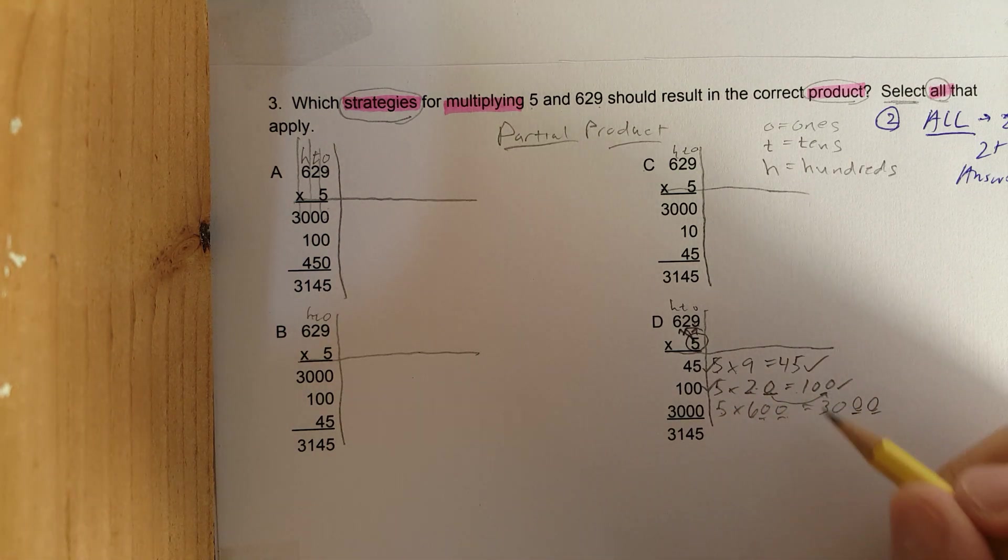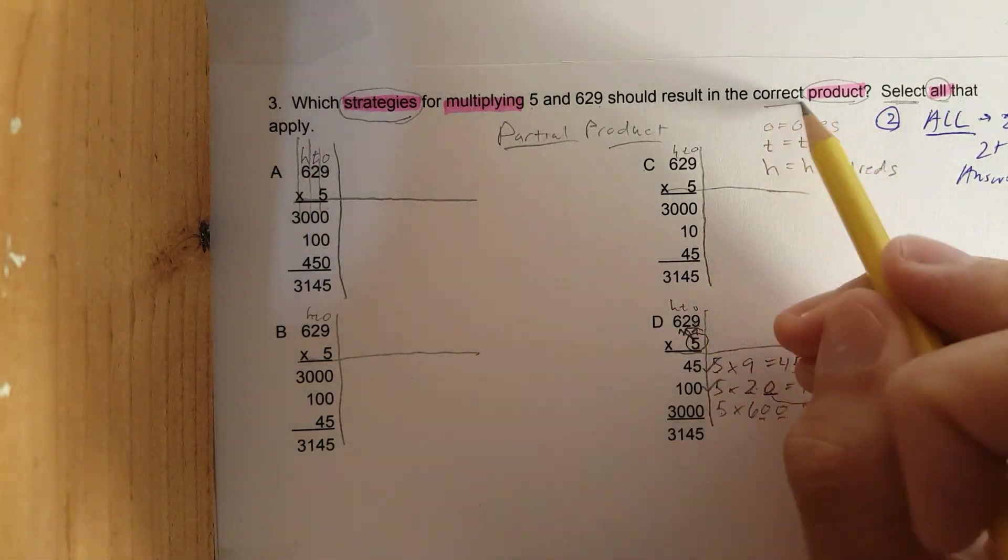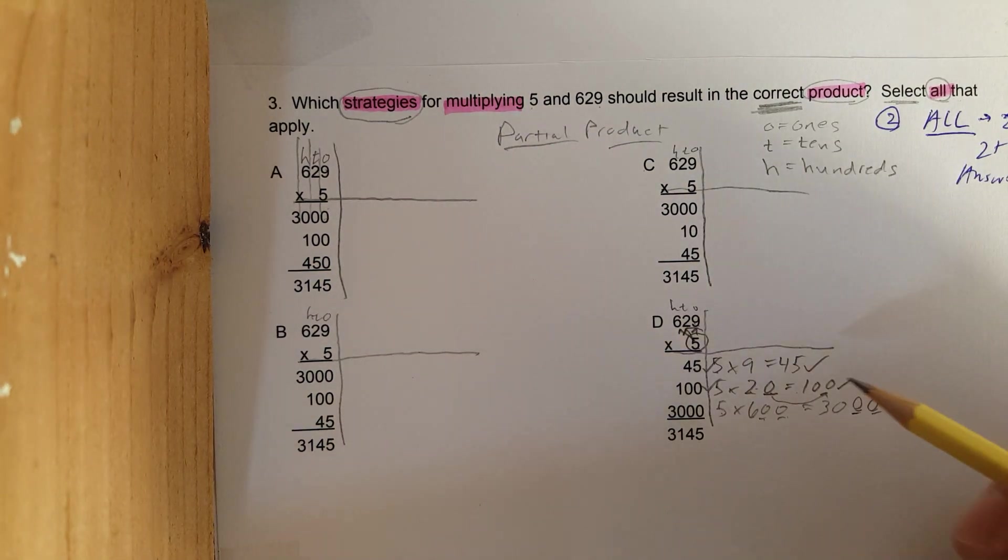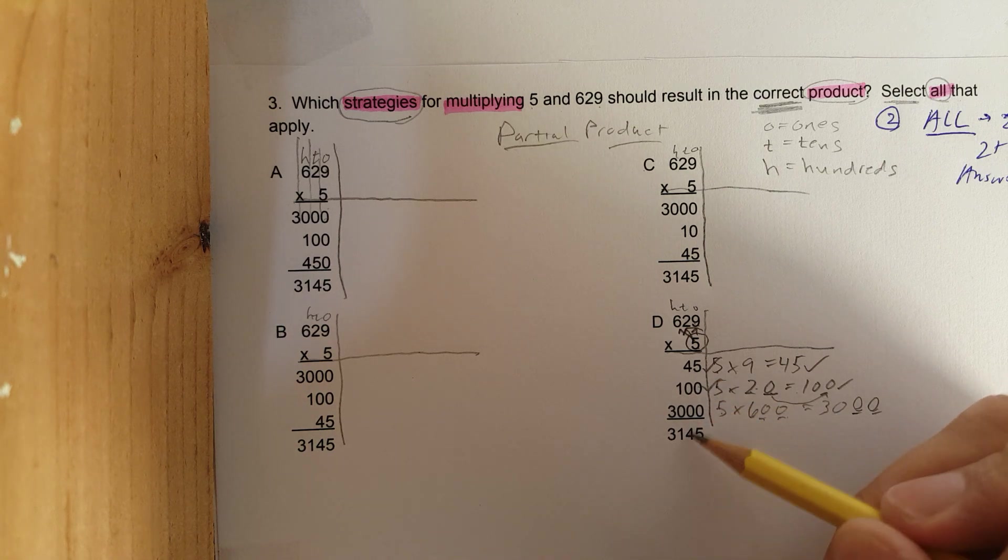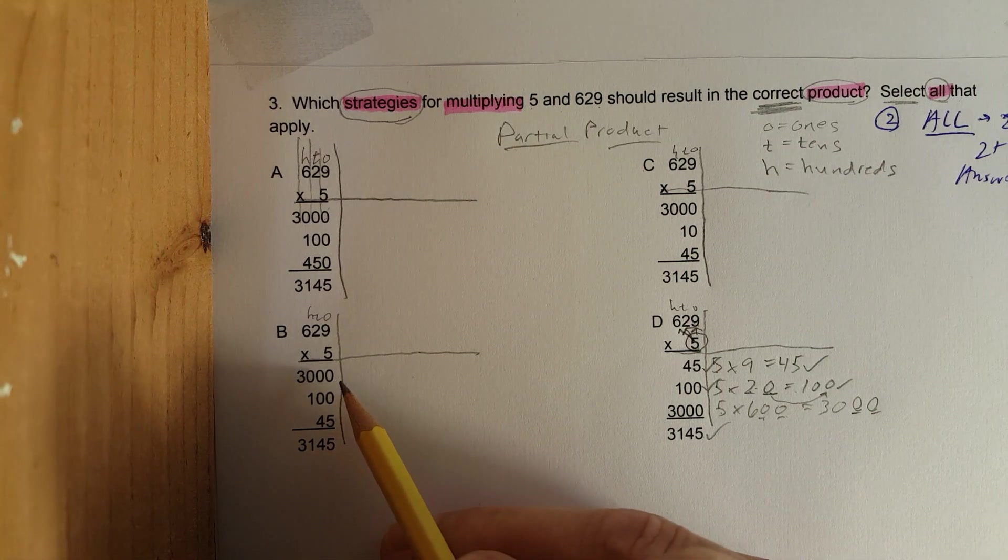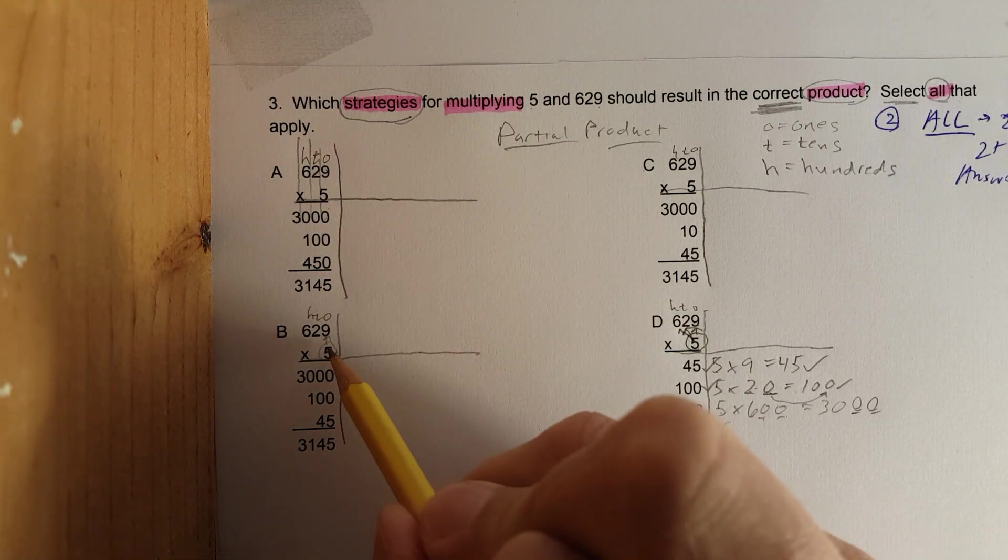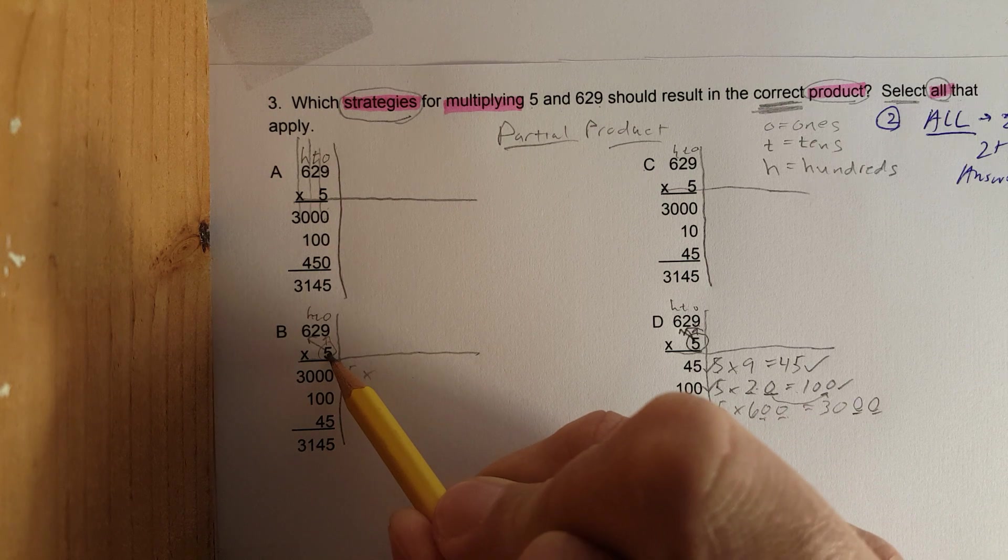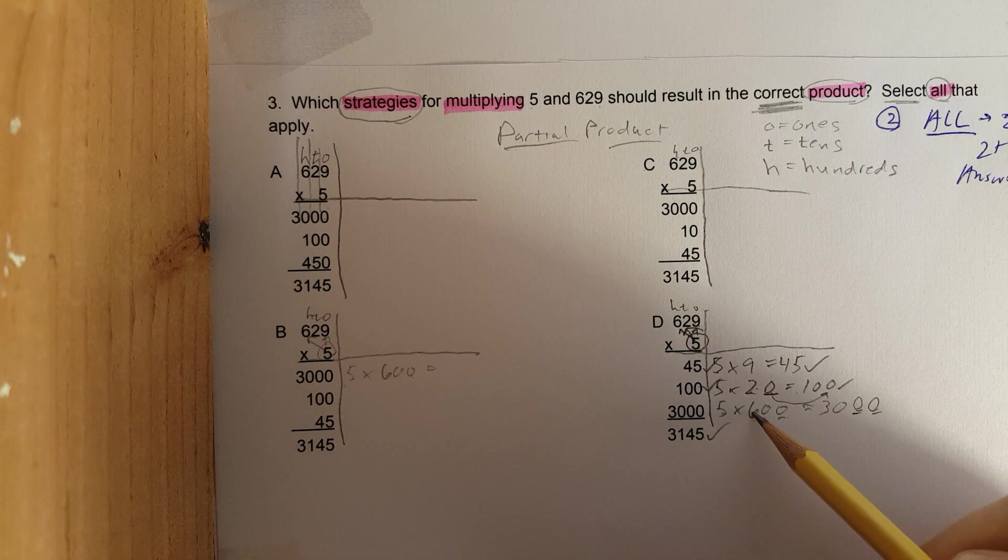Notice how I underline the zeros. All I need to focus on now is what is 5 times 6? 5 times 6 is 30, and then I add two more zeros. A lot of times students make mistakes because they just forget a zero. So 45 is correct, 100 is correct, 3000 is correct. Let's make sure that was added correctly: 5 plus 0 plus 0 plus 0 is 5, 4, 1. This should work.